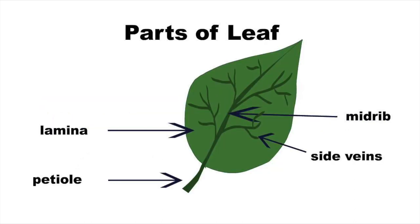The parts of the leaf: the stalk of the leaf is called the petiole; the leaf blade is called the lamina; the main vein is called the midrib, and there are also side veins. On the undersurface of the leaf there are stomata for transpiration and exchange of gases.